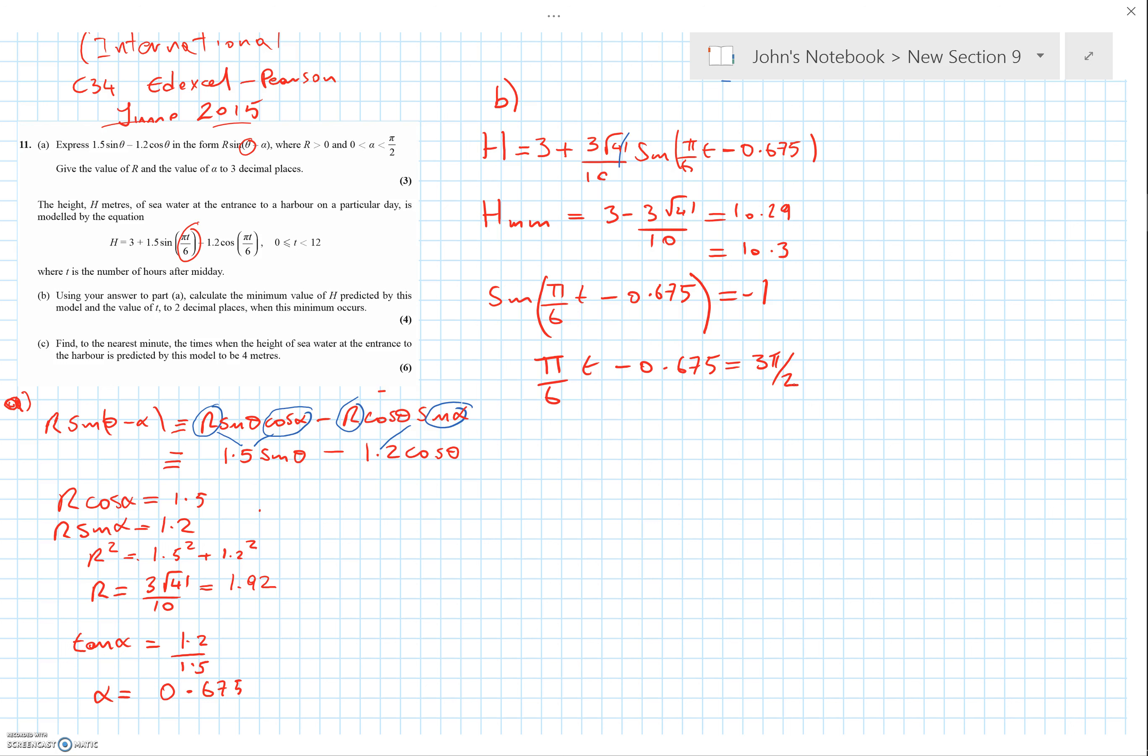Solving that, I'll leave you to do the fiddling around—adding 0.675, multiplying by 6, dividing by π—you will get this answer for T, which is 10.29. It asked for two decimal places, so we better write 10.29. That's part B done.